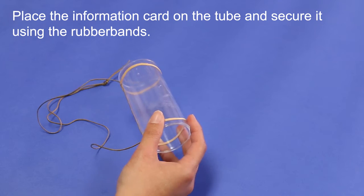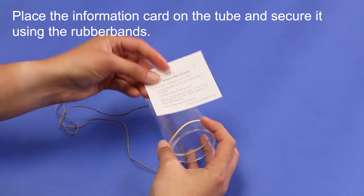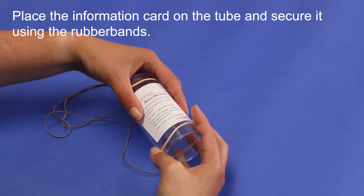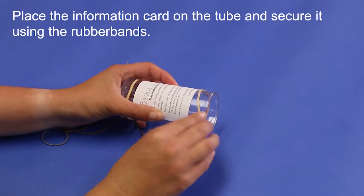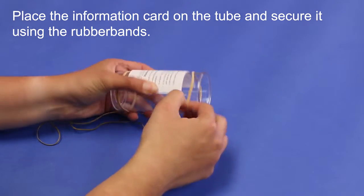Now grab the instruction sheet that we saw earlier, place it on the tube, and then move the rubber bands to secure it in place.